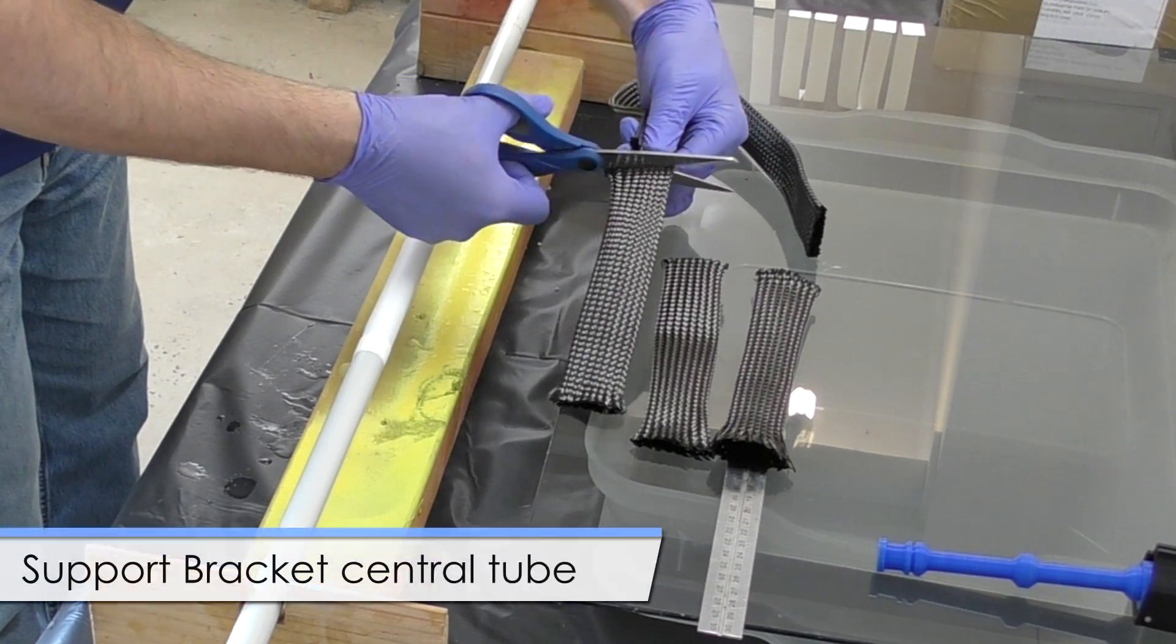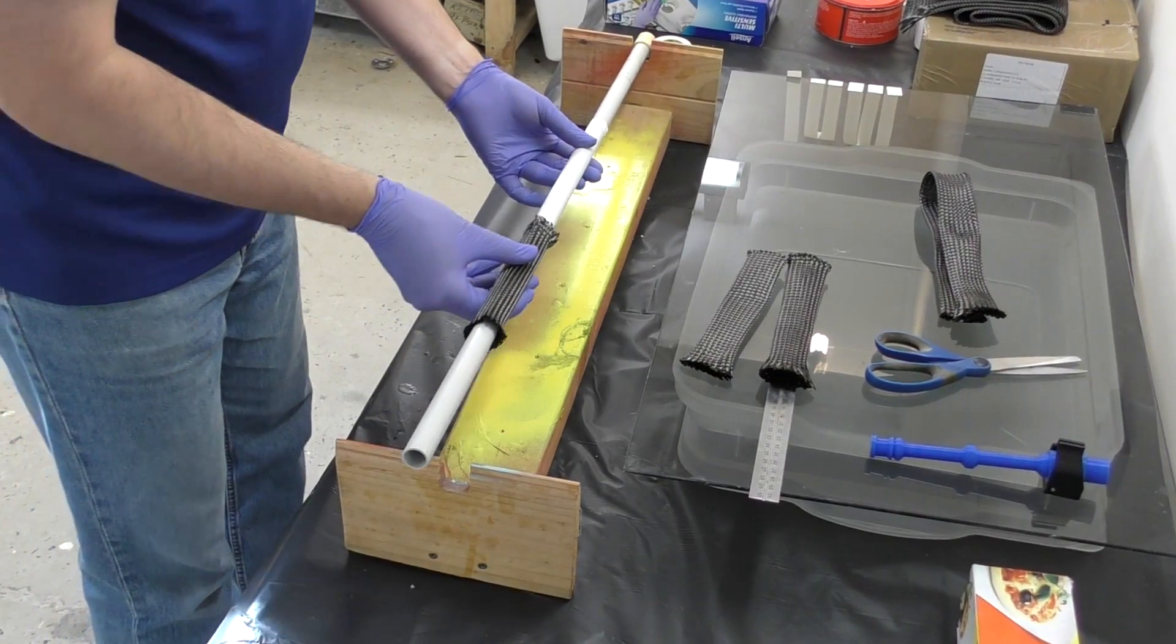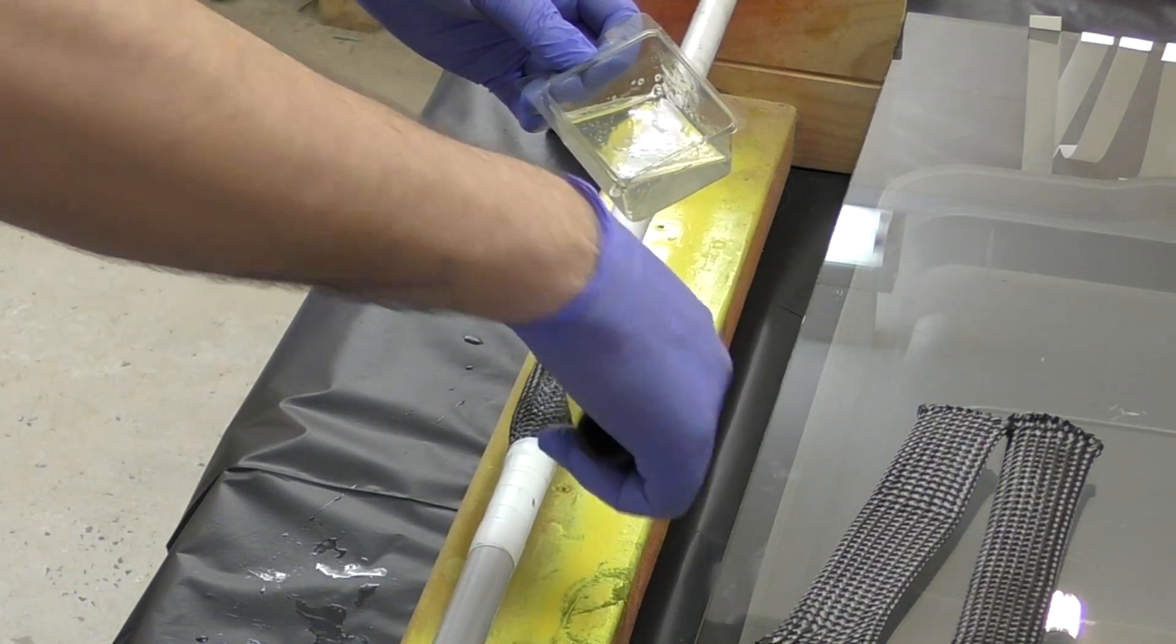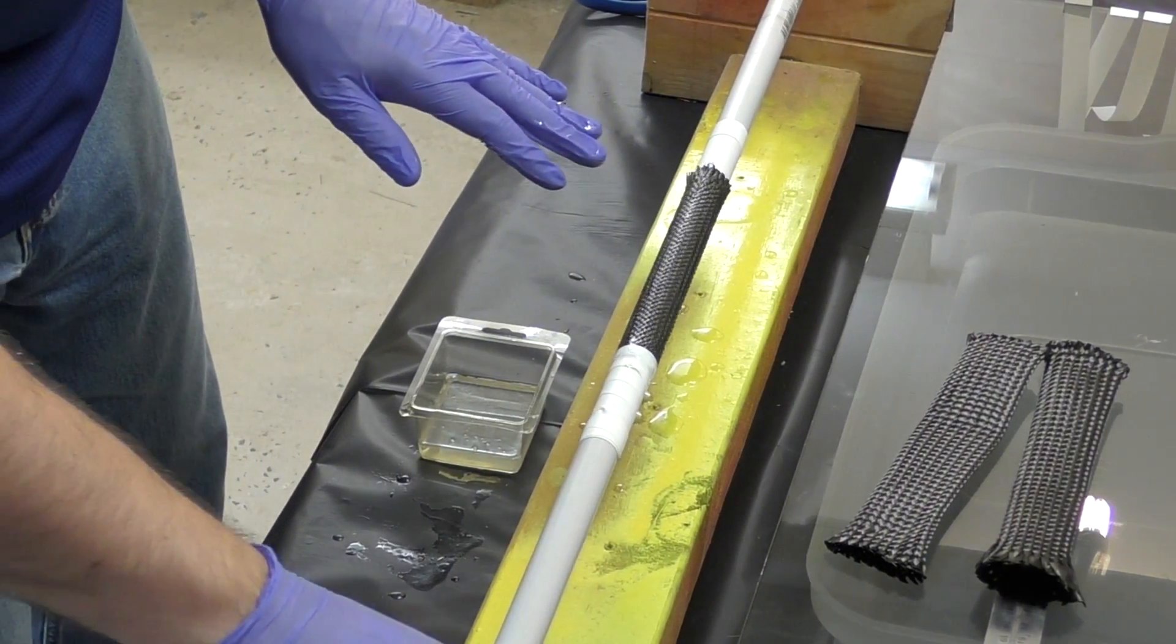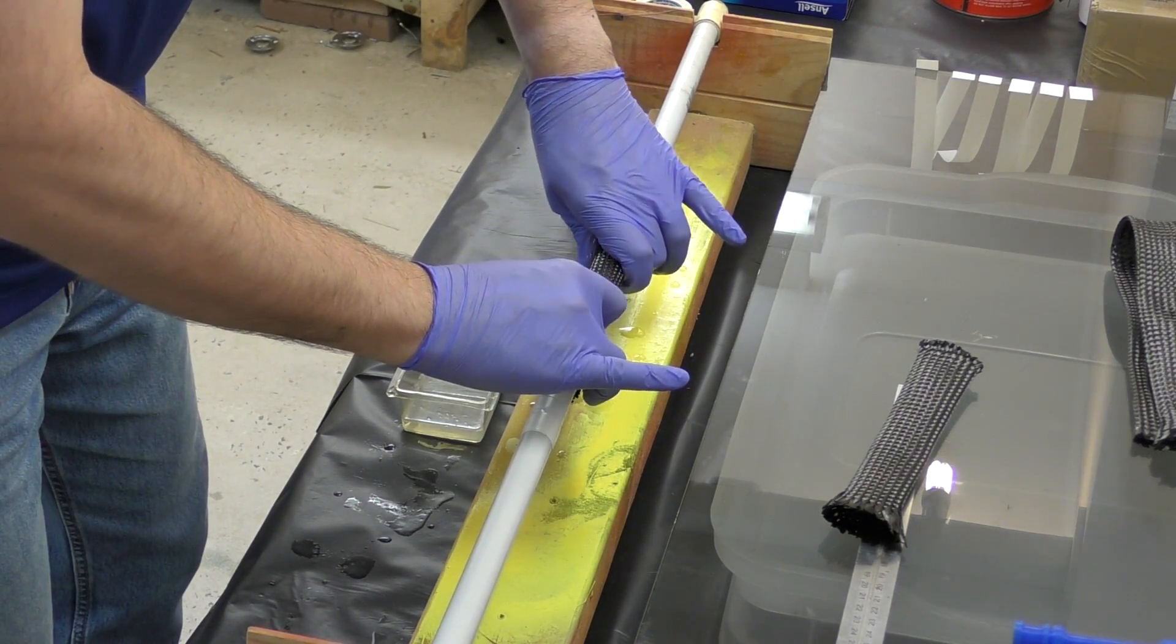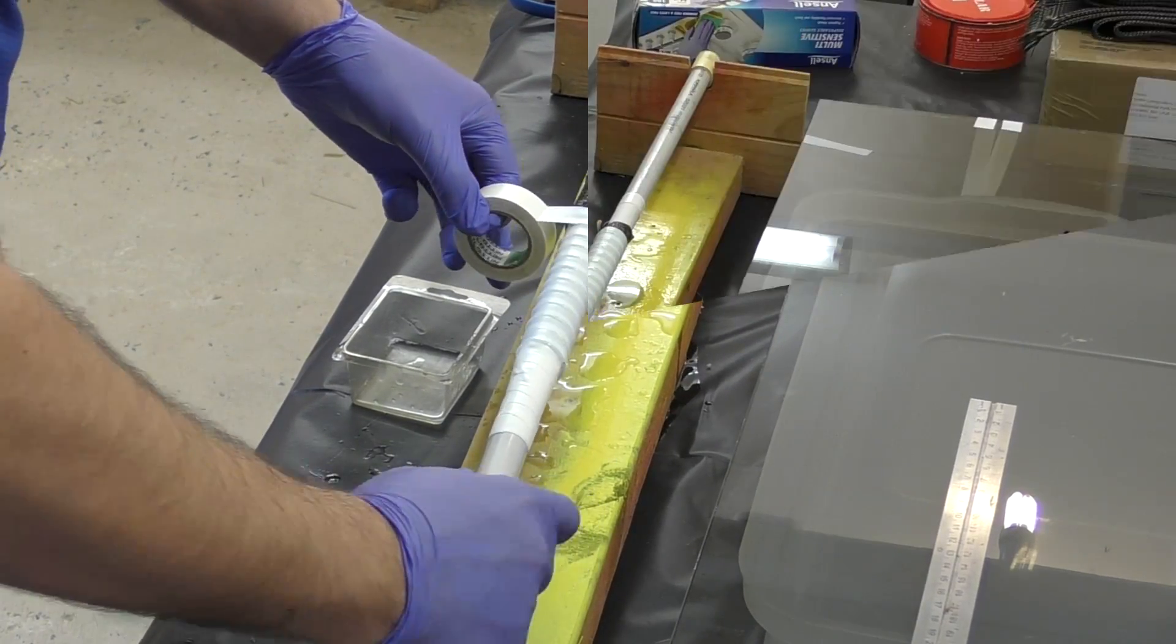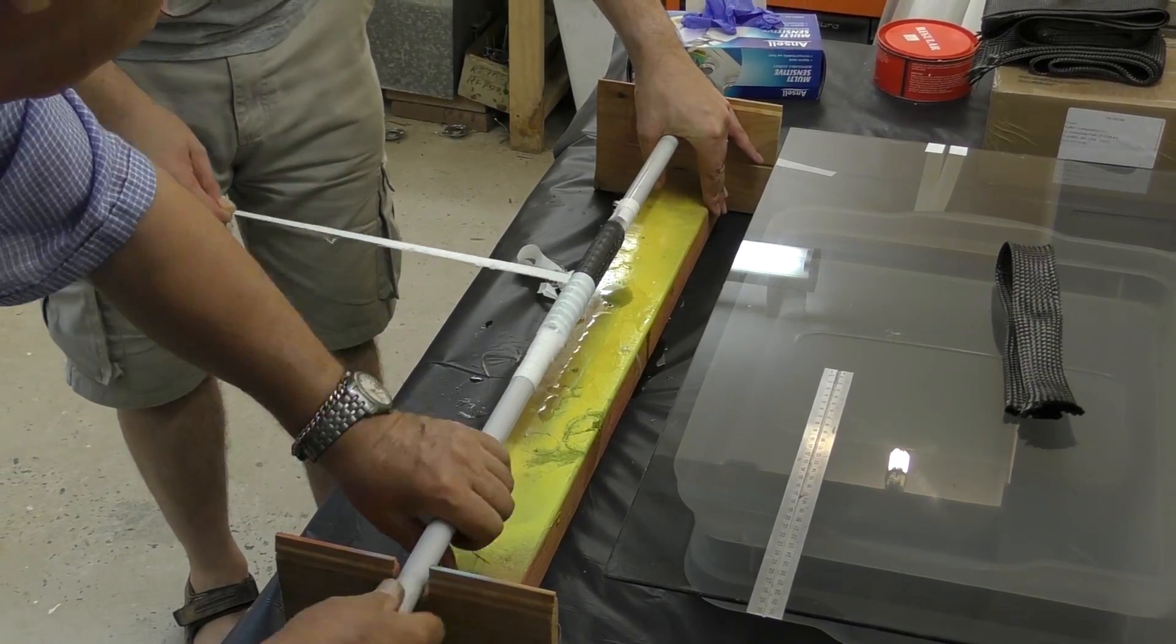First off, we made the central carbon fiber tube. It's made from several layers of heavy duty carbon sleeve. Like always, we used West Systems epoxy for this. After it cured, we pulled it off the mandrel and cut off the ends.